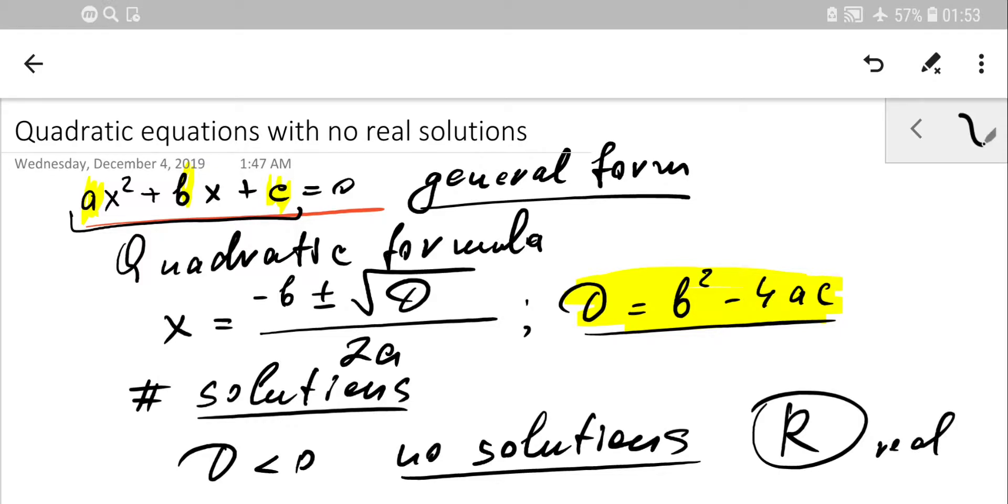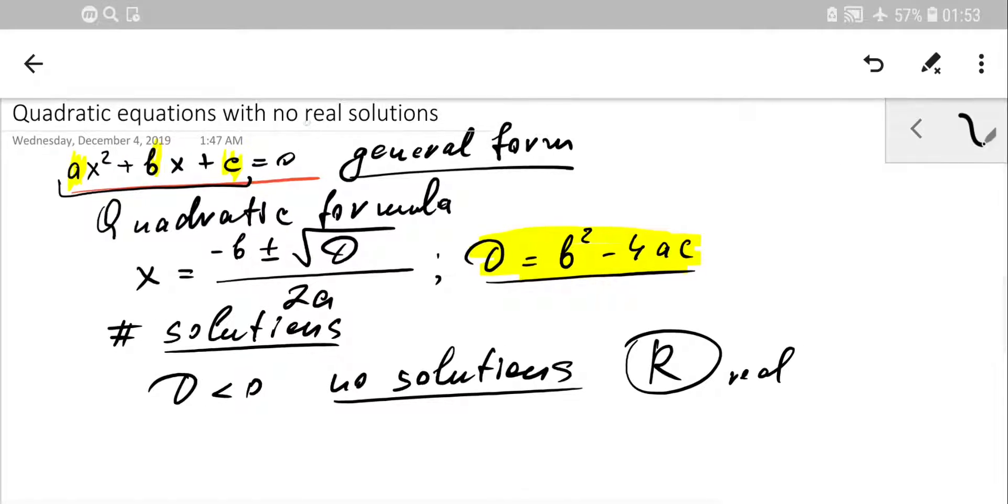So number line only about real numbers. And that's why when we're saying there is no solution or there are no solutions, we actually mean that there are no real solutions. Okay, complex solutions might be. So anyway, we are focused on real number line. And right now this is the tool how to estimate whether your quadratic equation has solution or it doesn't have.